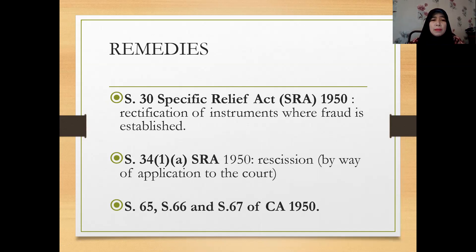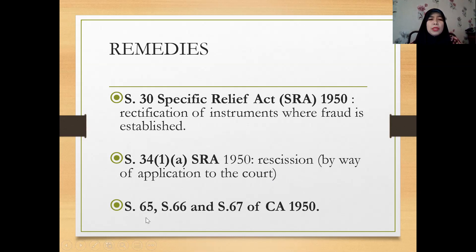As for remedies, we have some relevant provisions. Section 30 of the Specific Relief Act talks about rectification of an instrument where fraud is established — sometimes it is possible to rectify and proceed with the contract, since it is voidable. Another is Section 34(1)(a) of the Specific Relief Act, which provides for rescission — you set aside the contract, and the affected party applies to the court. Other relevant sections are Sections 65, 66, and 67 of the Contracts Act, which talk about void contracts and the effects on the obligations of the parties.